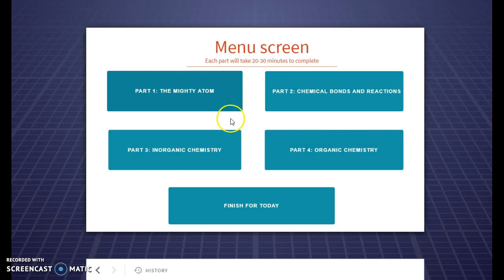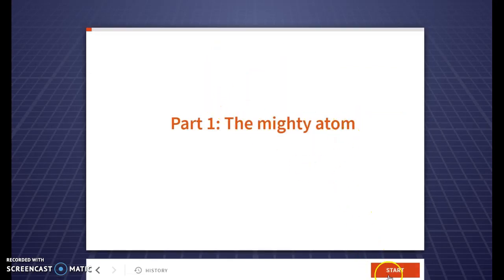Now within the lesson it's broken up into three sections. If you've studied chemistry before you might be really confident about the atom so you might skip that section and start with chemical bonds for example. If you haven't studied chemistry before I really recommend you start with part one, the mighty atom.